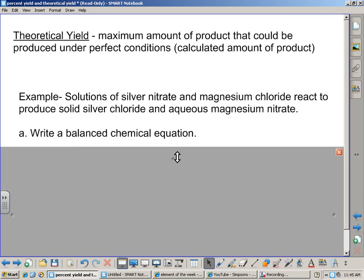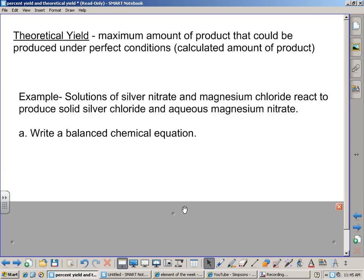Alright, so let's go ahead and do two examples of this. Example number one, we're going to take a solution of silver nitrate, mix it with a solution of magnesium chloride, and we're going to produce a solid, a precipitate, silver chloride, and have aqueous magnesium nitrate left in our solution. What I'd like you to do after you copy down this sentence is I'd like you to write a balanced chemical equation for this. And I'll give you a couple moments to do that.